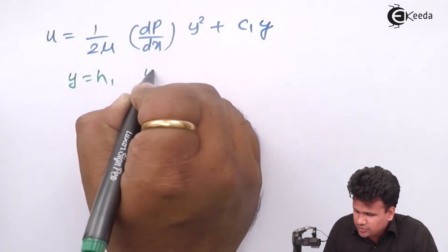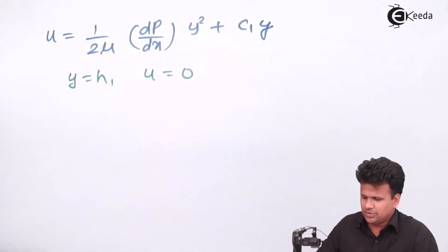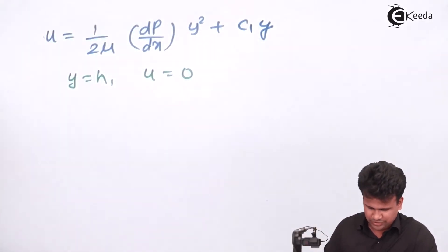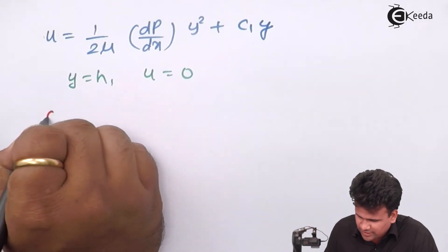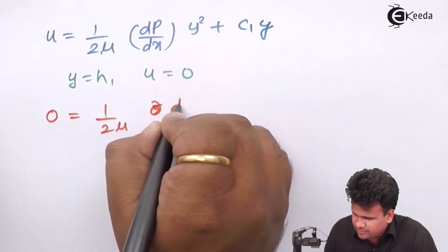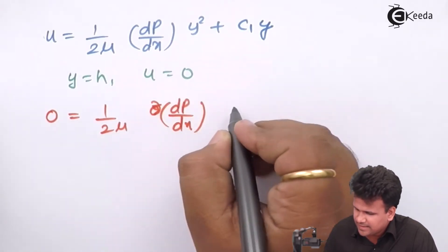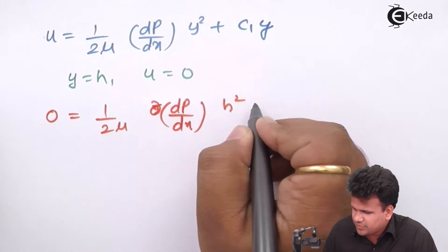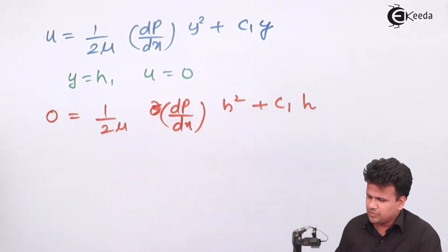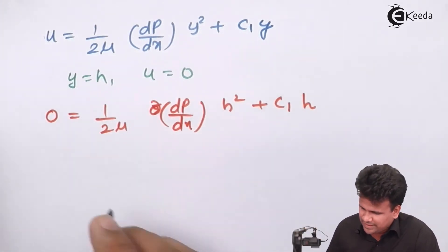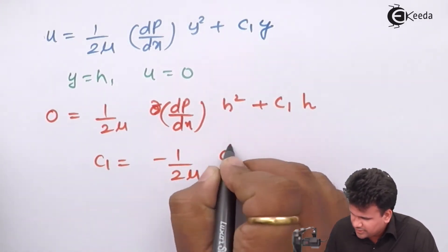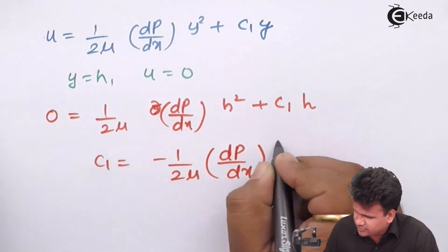Next we substitute the second boundary condition: when y is equal to h, u is also equal to 0. Substituting, we get 0 equal to 1 upon 2μ · dp/dx · h² + c1·h. Taking terms to the other side and dividing by h, we get c1 equal to minus 1 upon 2μ · dp/dx · h.